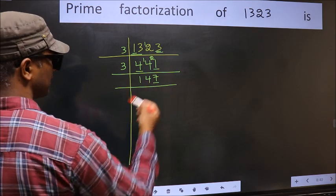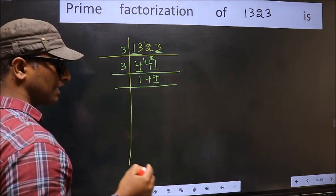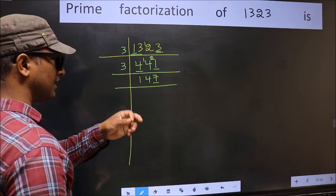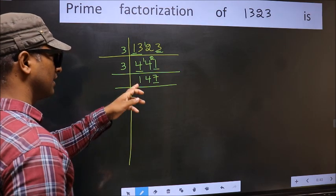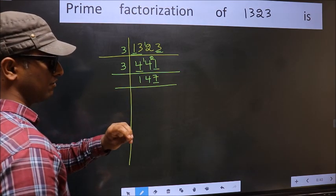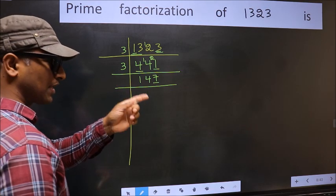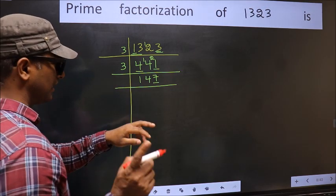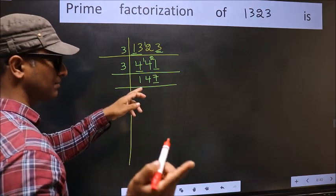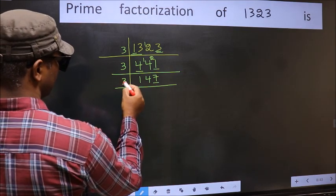Now the last digit 7 is not even, so not divisible by 2. To check divisibility by 3, we add the digits: 1 plus 4 plus 7, we get 12. 12 is divisible by 3, so this number is also divisible by 3. So take 3 here.